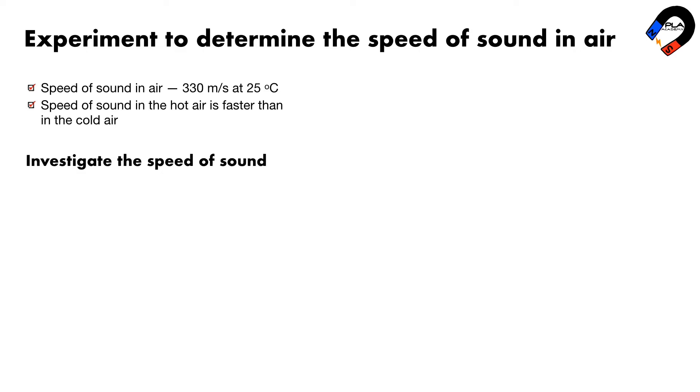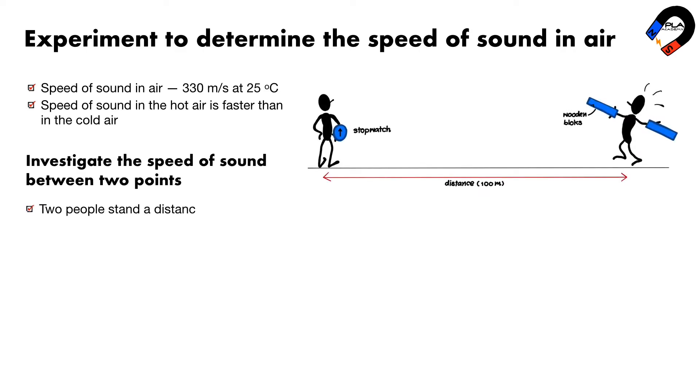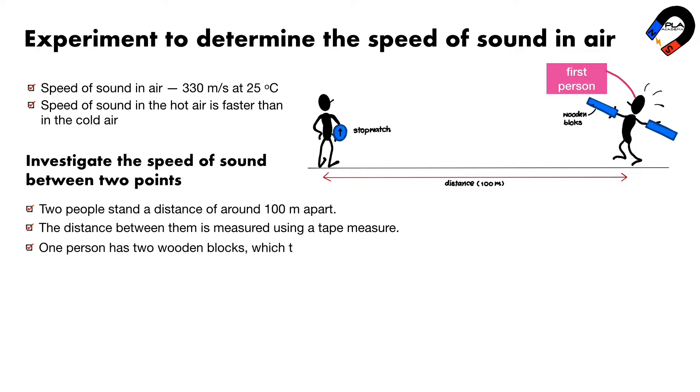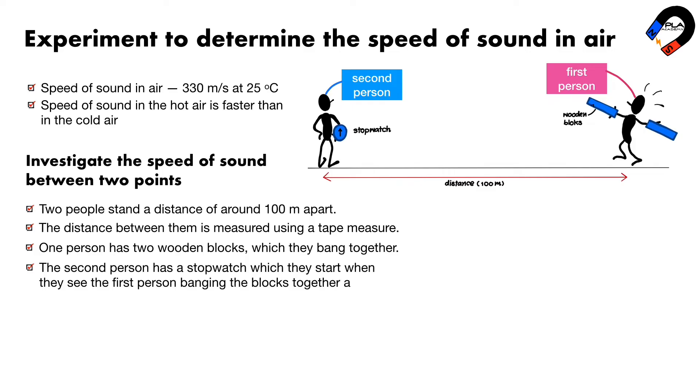Investigate the speed of sound between two points. Two people stand a distance of around 100 meters apart. The distance between them is measured using a tape measure. One person has two wooden blocks, which they bang together. The second person has a stopwatch, which they start when they see the first person banging the blocks together, and stops when they hear the sound.